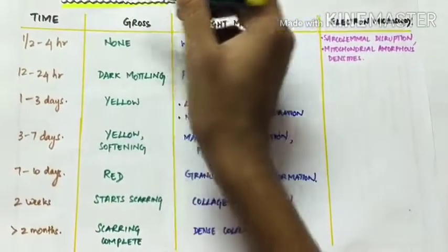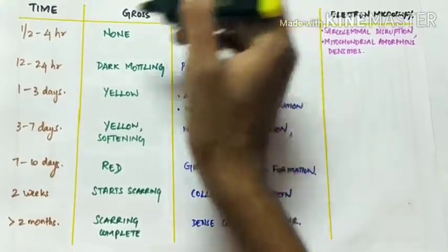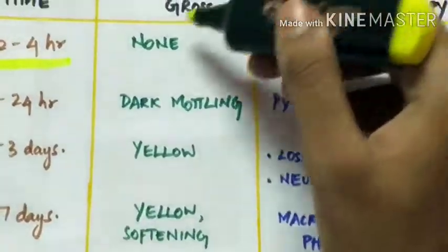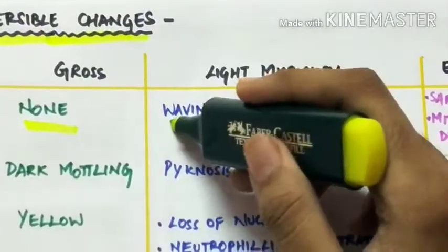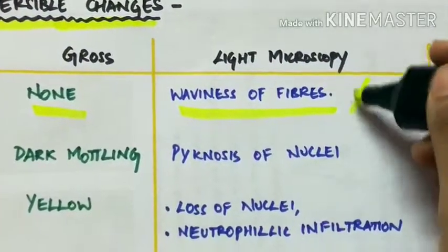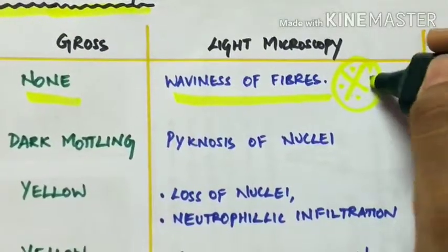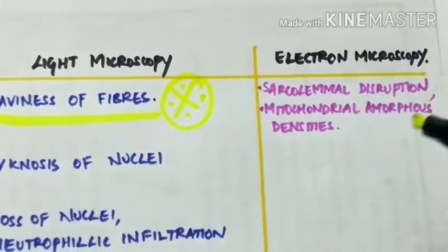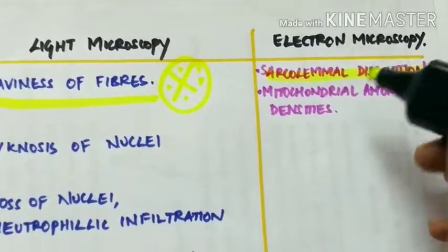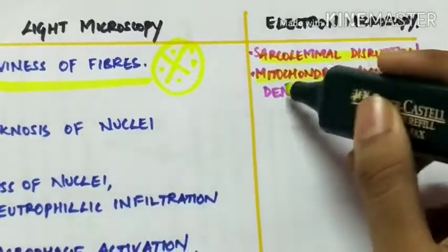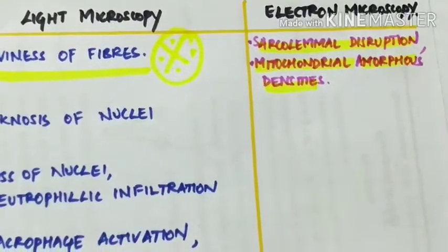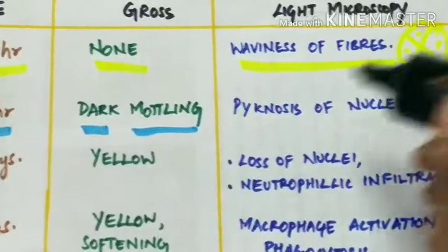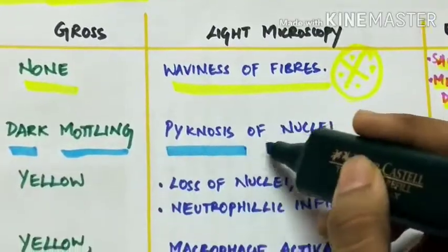Irreversible changes at different time intervals: from 30 minutes to 4 hours, there is no gross change, but light microscopy shows waviness of fibers — the first irreversible feature. Electron microscopy shows sarcolemmal disruption and mitochondrial amorphous densities. At 12 to 24 hours, grossly there is dark mottling, and light microscopy shows pyknosis of nuclei.